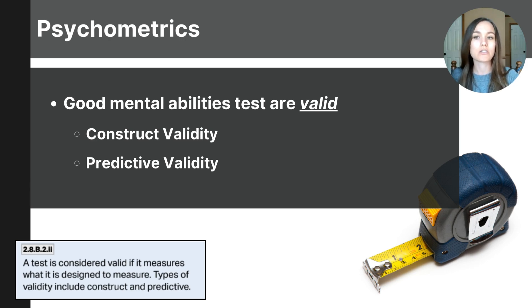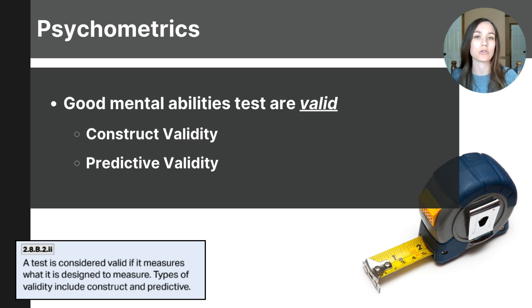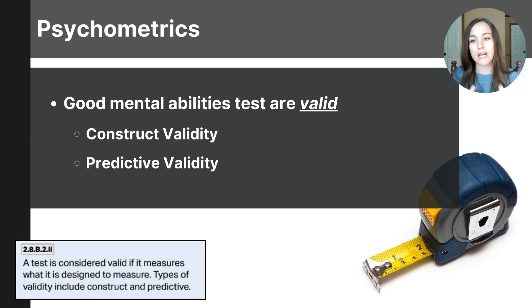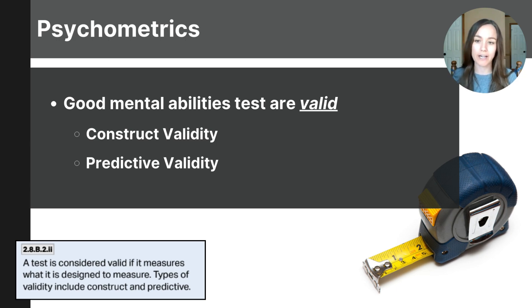Predictive validity shows us how well a test can forecast future performance, while construct validity ensures the test accurately measures what it's intended to measure. Both types of validity help confirm that the tests we use are effective and meaningful in assessing particular mental abilities.